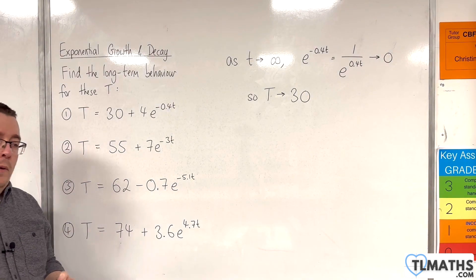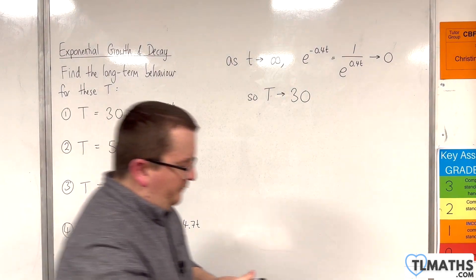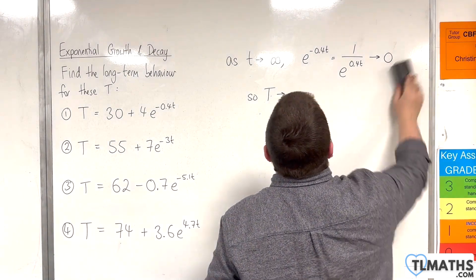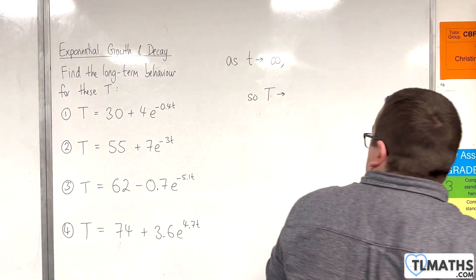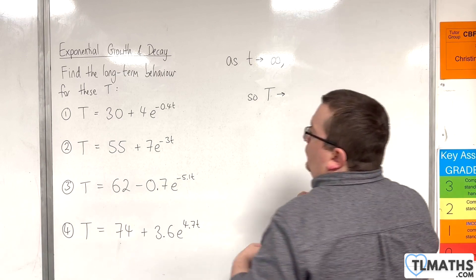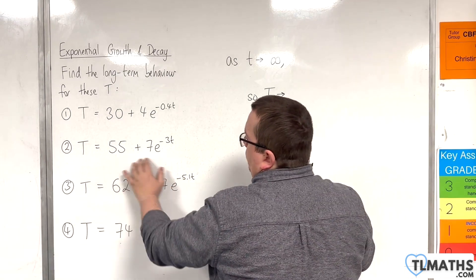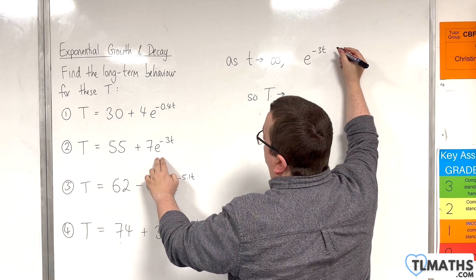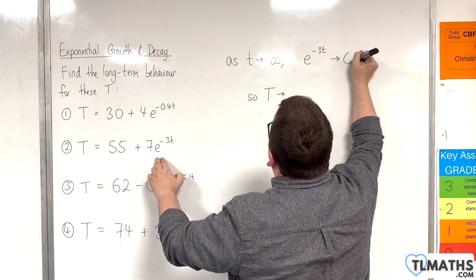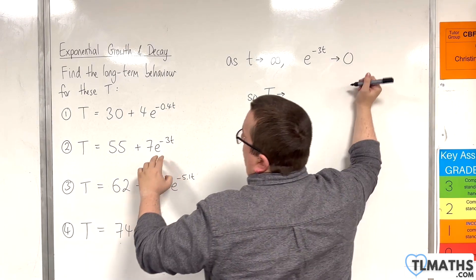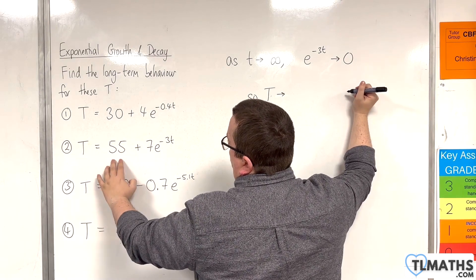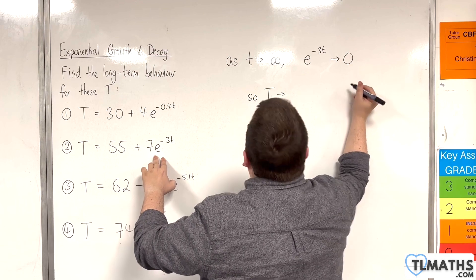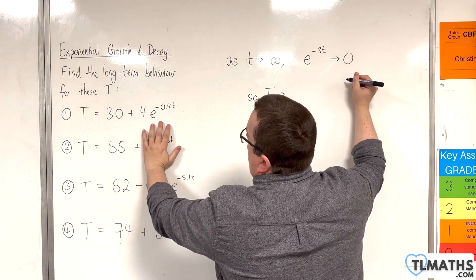So that's our first one. Now, the second one: as t is tending to infinity, the e to the minus 3t, for the same reasons as before, will be tending towards 0. So, capital T will be tending towards 55 plus 7 lots of something that is tending towards 0. So, that would be 55.